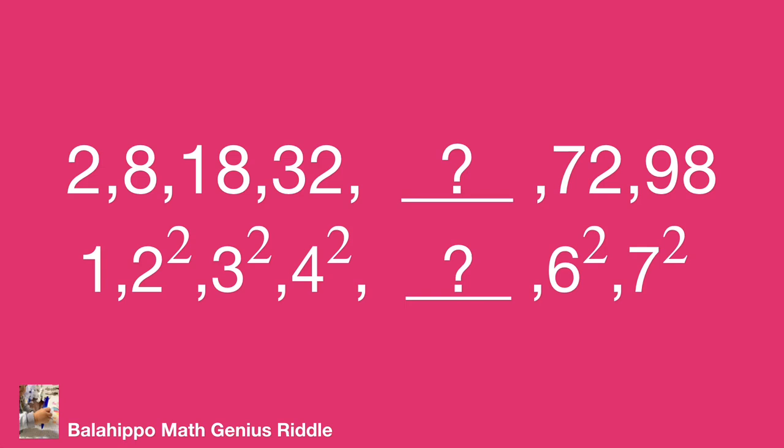This means the missing number would be 5 squared. So our result for this missing number equals 2 times 5 squared, which is 50.